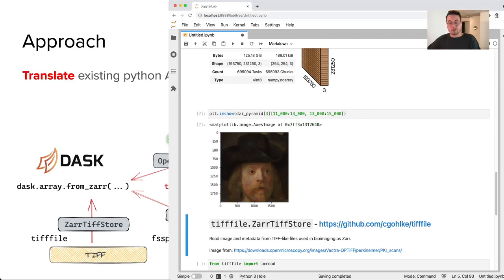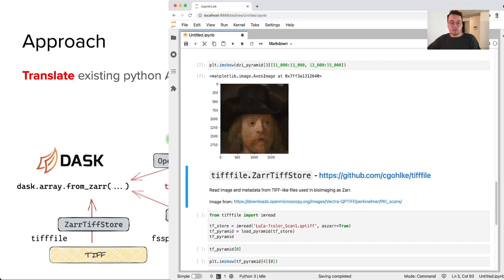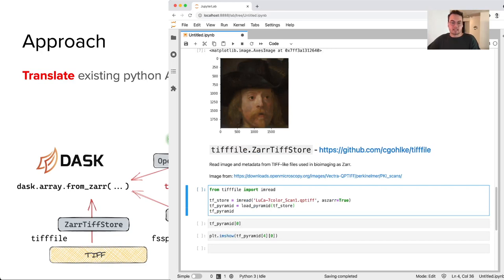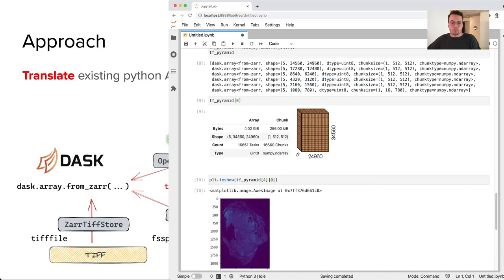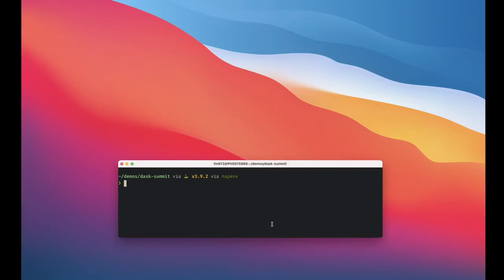And finally, I can use the TIFF file library and its built-in imread function with aszar to read another multi-channel imaging dataset as a multi-scale Dask array. Here I'm reading that image, I can print off the highest resolution, and I can draw one of the channels from that image at a lower resolution.